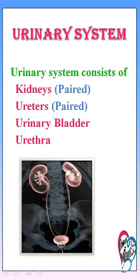The urinary system consists of pairs of kidneys, pairs of ureters, urinary bladder and urethra.